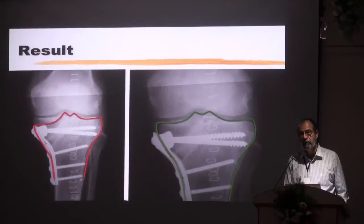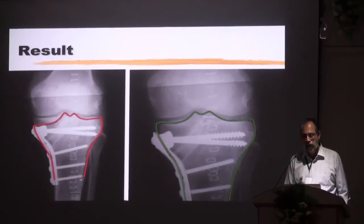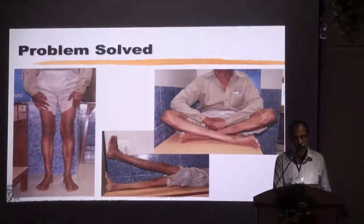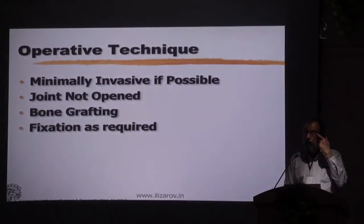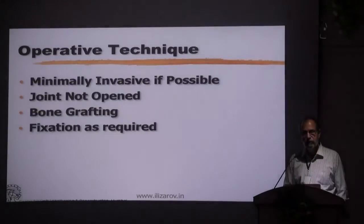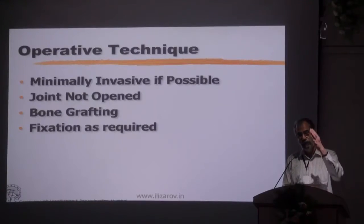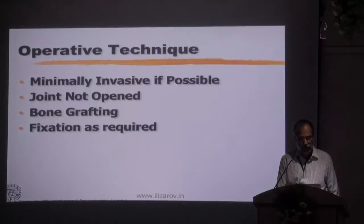A simple fixation and that problem is solved. On the left side the red outline is the preoperative outline, and on the right side is the postoperative x-ray with the preoperative outline of the normal side. We have restored normalcy. The operative technique is to be minimally invasive if possible. Remember, minimally invasive does not mean a small incision — it refers to the amount of injury you are causing to the soft tissue. You can be minimally invasive with a large incision also.